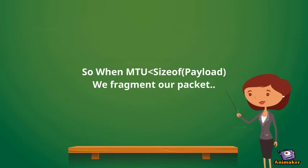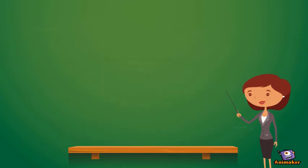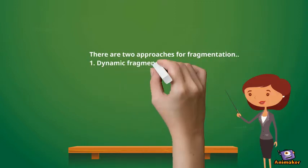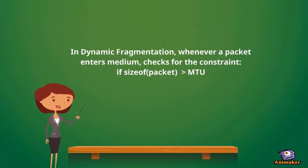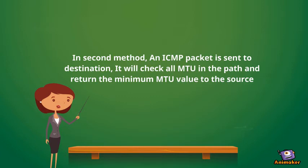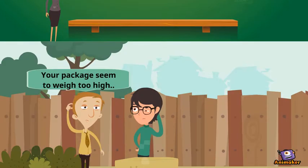There are two approaches for fragmentation. First, dynamic fragmentation. Second, fragment to a least MTU. In method one, we fragment if the packet size is greater than the MTU while entering a medium. In method two, an ICMP message is sent — it checks all the MTUs in the path and returns the result to the source.